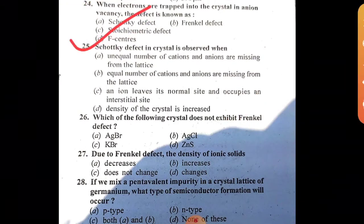Schottky defect in the crystal is observed when equal numbers of cations and anions are missing from the lattice.